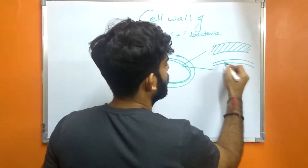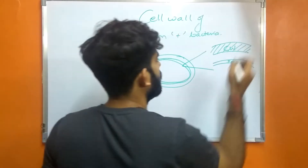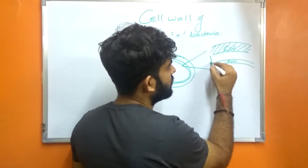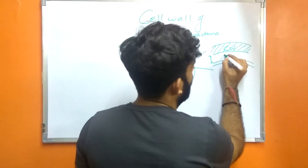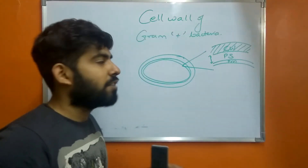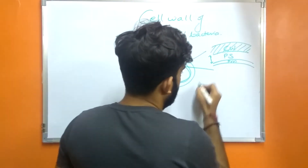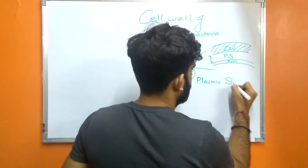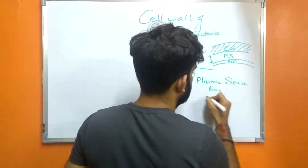This is the plasma membrane. If I zoom into this region, this is the cell wall and this is the plasma membrane. The space between the cell wall and the plasma membrane is known as the periplasmic space. This periplasmic space has many granular layers.